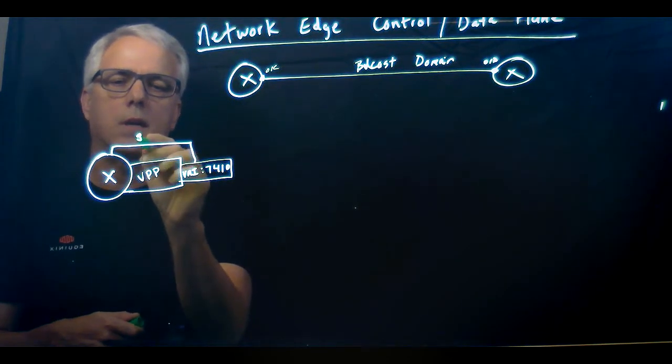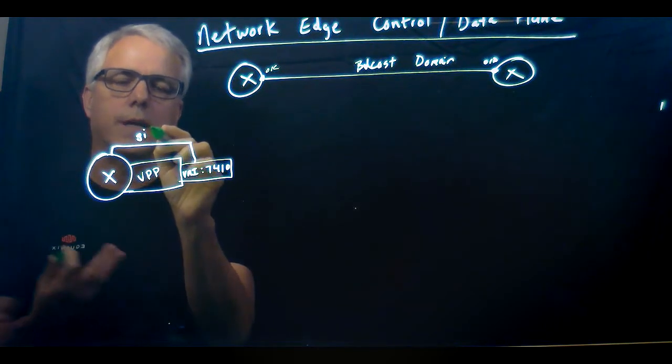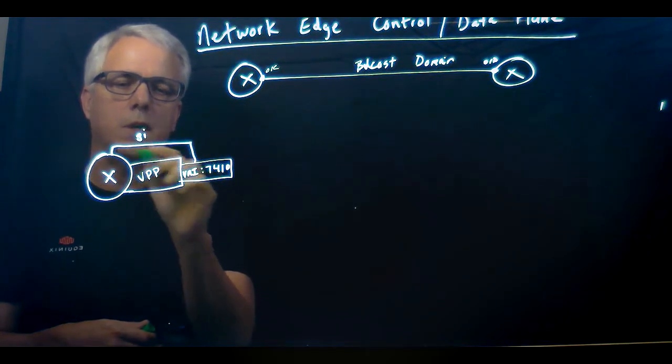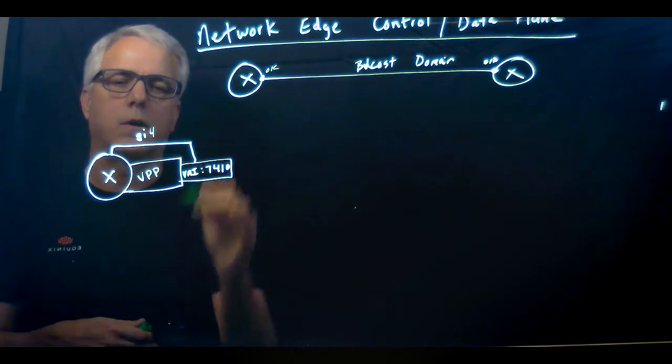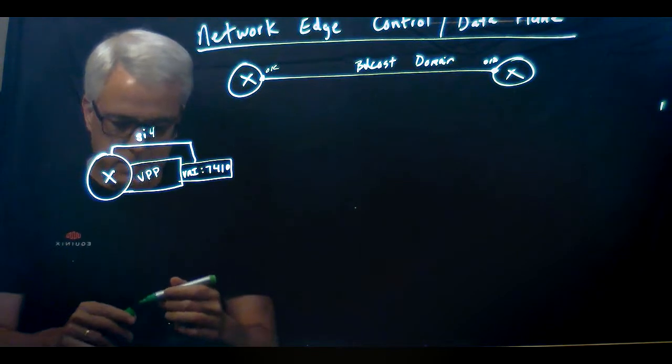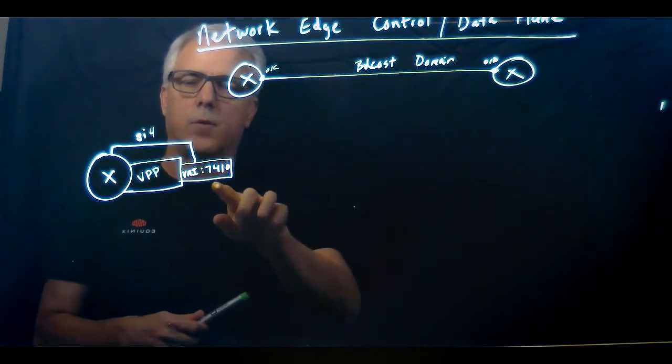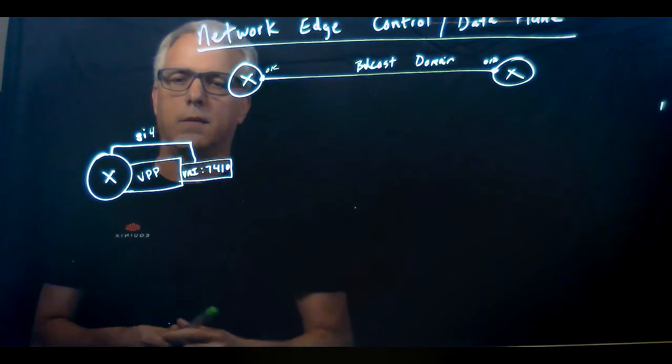Say this is gig interface gig 4 on this network edge device. VNI 7400 is attached to gig 4.